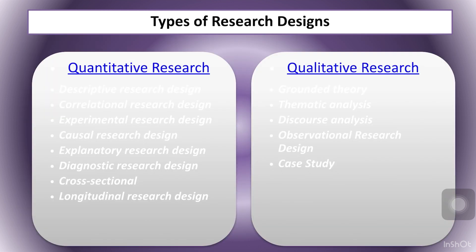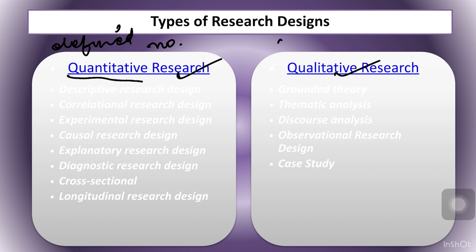Broadly we have two types of research designs. First is quantitative research design and another is qualitative. As the meaning suggests, quantitative is what can be defined in numbers, and qualitative is what cannot be defined in numbers. We are going to discuss all these research designs one by one.